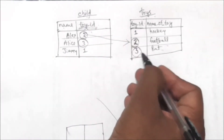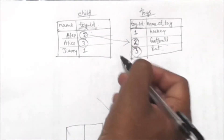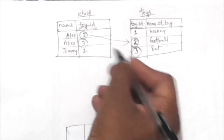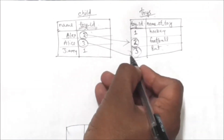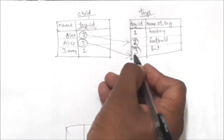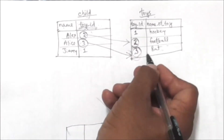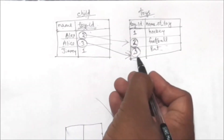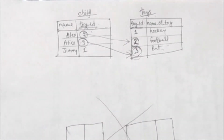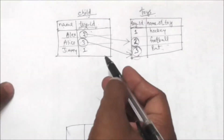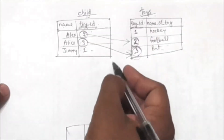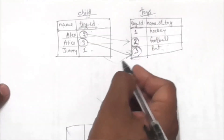Similarly, see in this row the value of toy_id is 3, and in this row of the toys table the value of toy_id is also 3. So these two values are the same, so this row of the child table will be joined with this row of the toys table. This is how natural join is performed on these two tables.